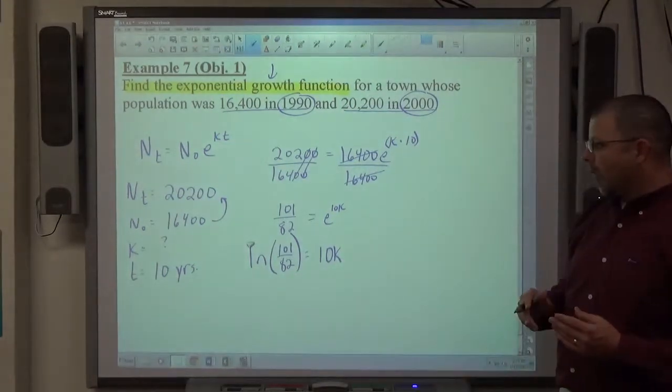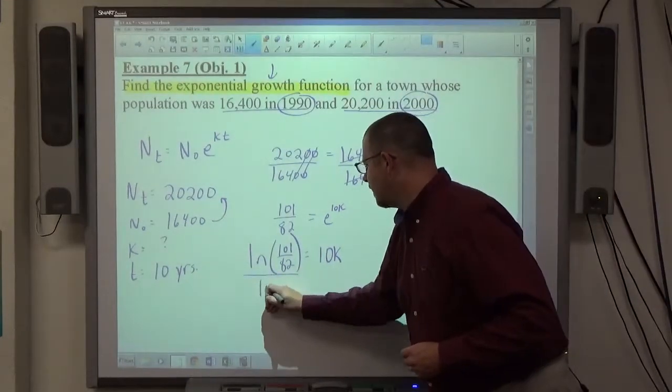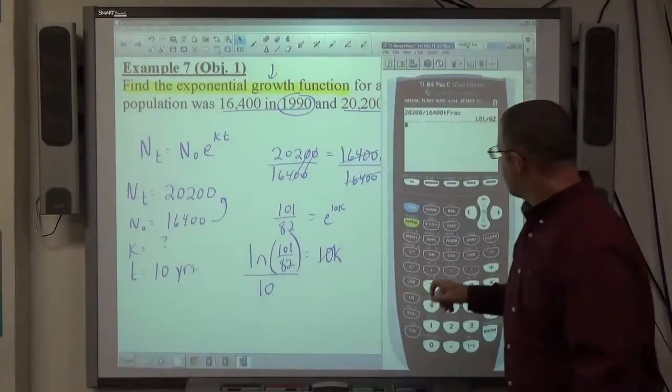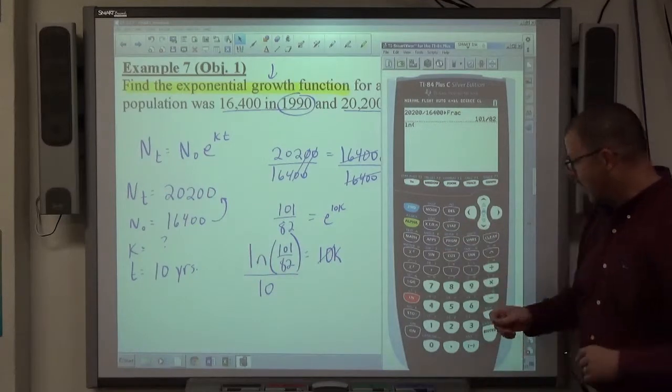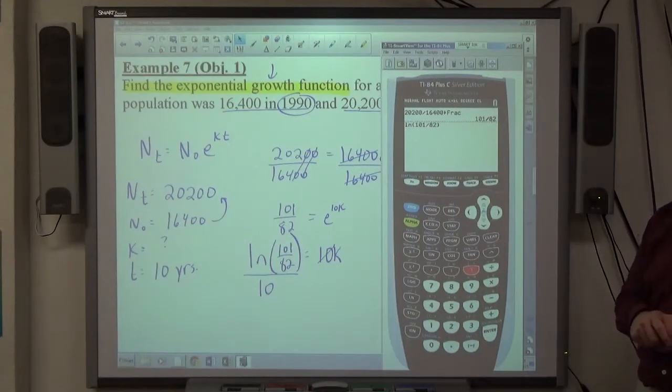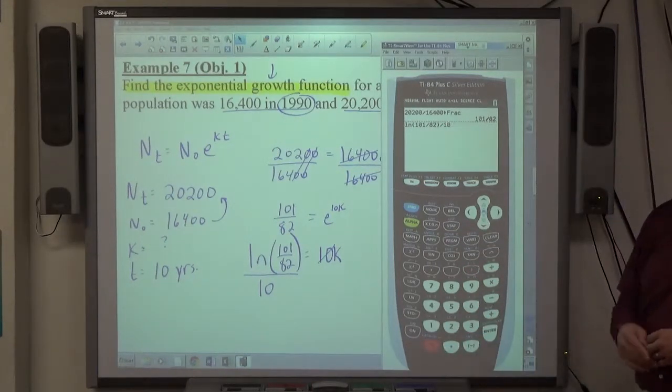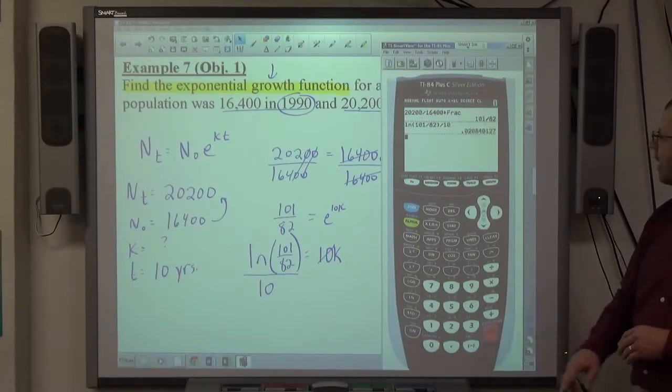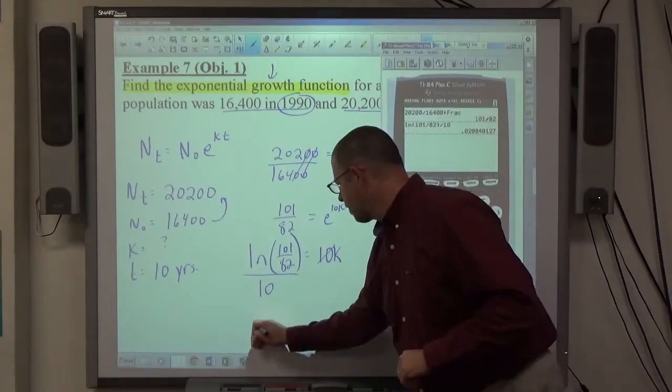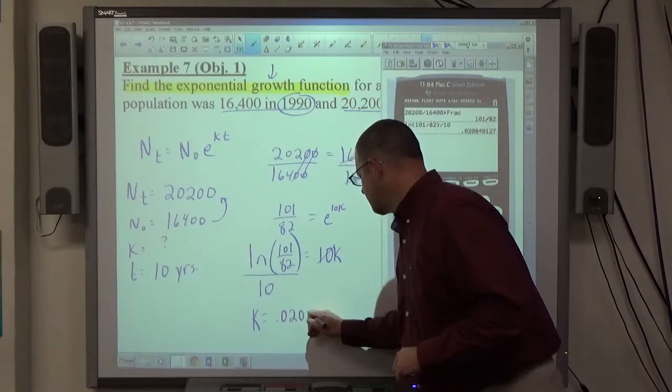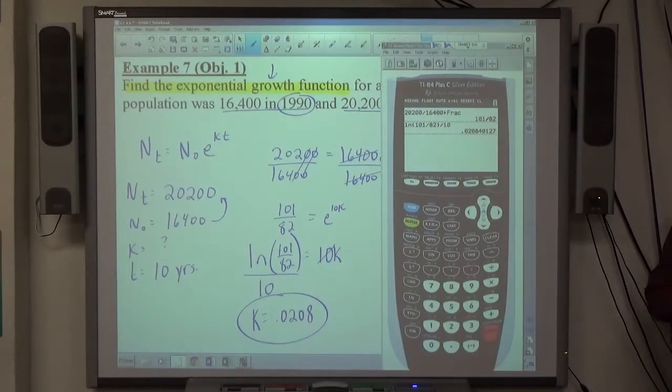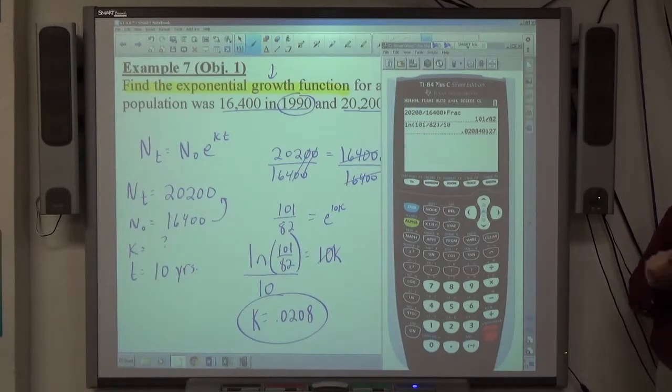If ln of 101 over 82 is equal to 10k, we divide both sides by 10. That gives me k is equal to that. At this point, this is where I want to actually round my answer. So, I'm going to type in ln and I'm taking the log of that entire fraction. So, parentheses, 101 divided by 82, end parentheses. That's the end of the logarithm. Divided by 10. Hit equals. I get .020840127. Four decimal places where I want you to go. So, k is equal to .0208. That's not the answer to the problem. That's just what k equals. Is everybody comfortable with finding k there?